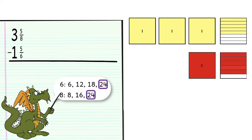When we get a common denominator, we don't actually change how much we have, but rather we're just representing it differently.